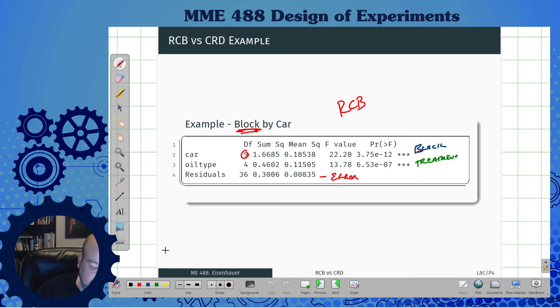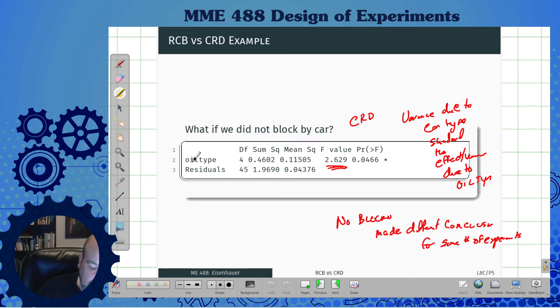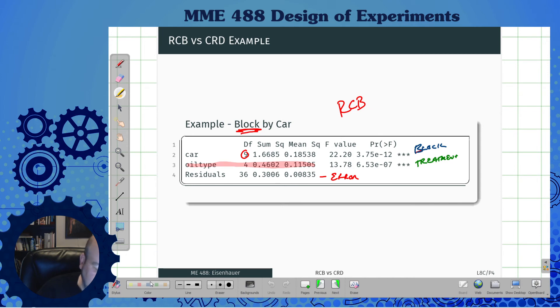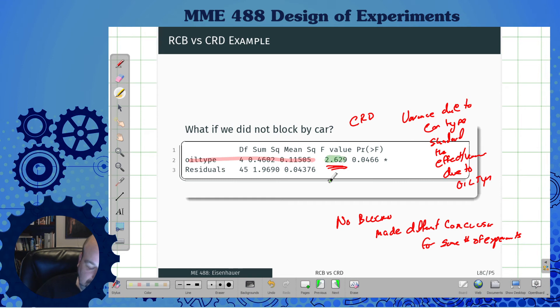Notice the oil type line. This is one thing to really pay attention to. This line, these two parts didn't change. This and this are exactly the same, but the F value changed significantly. This part versus this part changed quite significantly because the denominator changed a lot. We did not pull out the stuff from these residuals that was due to the car type. In this one we did, but we didn't remove it from this one. So that's why blocking is really important.